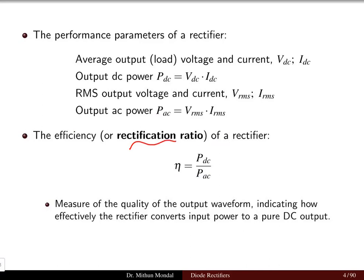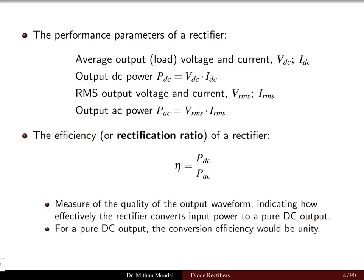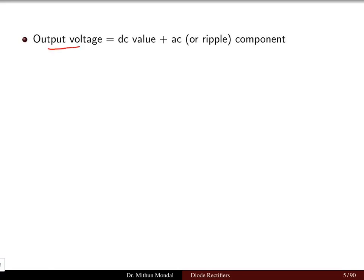The rectification ratio measures the quality of the output waveform, indicating how efficiently the rectifier converts input AC power to a pure DC power. For a pure DC output the conversion efficiency would be unity. The output voltage V0 equals the DC value plus some amount of ripple, which is basically AC. So the output voltage is the summation of a DC component plus an AC quantity.